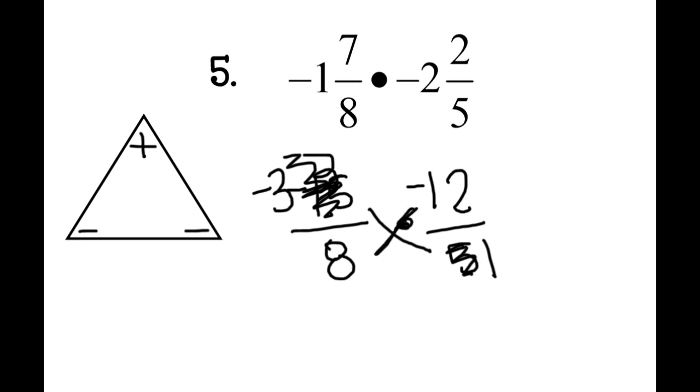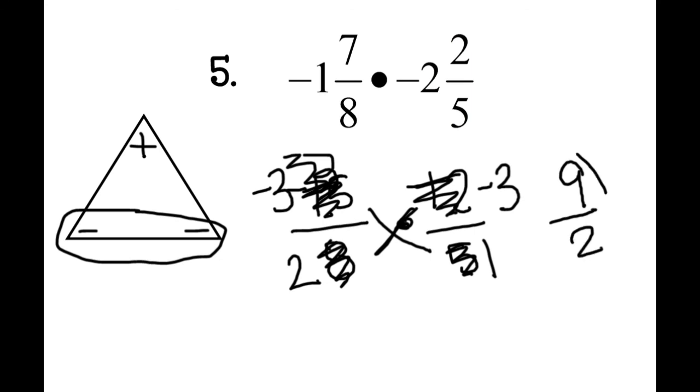4 goes into both 8 and negative 12. 8 divided by 4 would be 2, and negative 12 divided by 4 would be negative 3. Then I have a negative 3 times a negative 3, so you could think a negative times a negative equals a positive, or you could just circle my negatives. Negative 3 times negative 3 is a positive 9, and 2 times 1 is a positive 2. That's in its most reduced form, so I circle it. Or I could say 2 goes into 9 four times, which is 8 with 1 left over, so I could get 4 and a half as a mixed number.